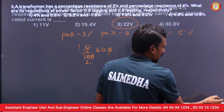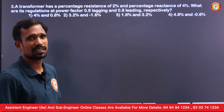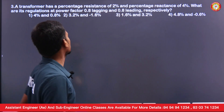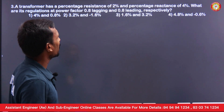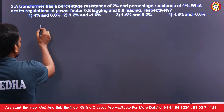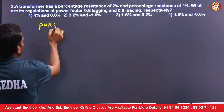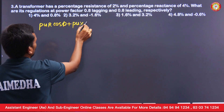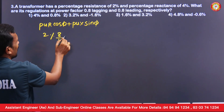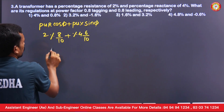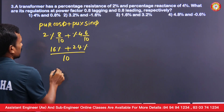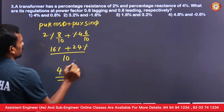Next question: a transformer has percentage resistance 2% and reactance 4%. Voltage regulation at 0.8 lagging: per unit R × cos φ + per unit X × sin φ = 2×0.8 + 4×0.6 = 16%/10 + 24%/10 = 40%/10 = 4%. For lagging load the voltage regulation is 4%.